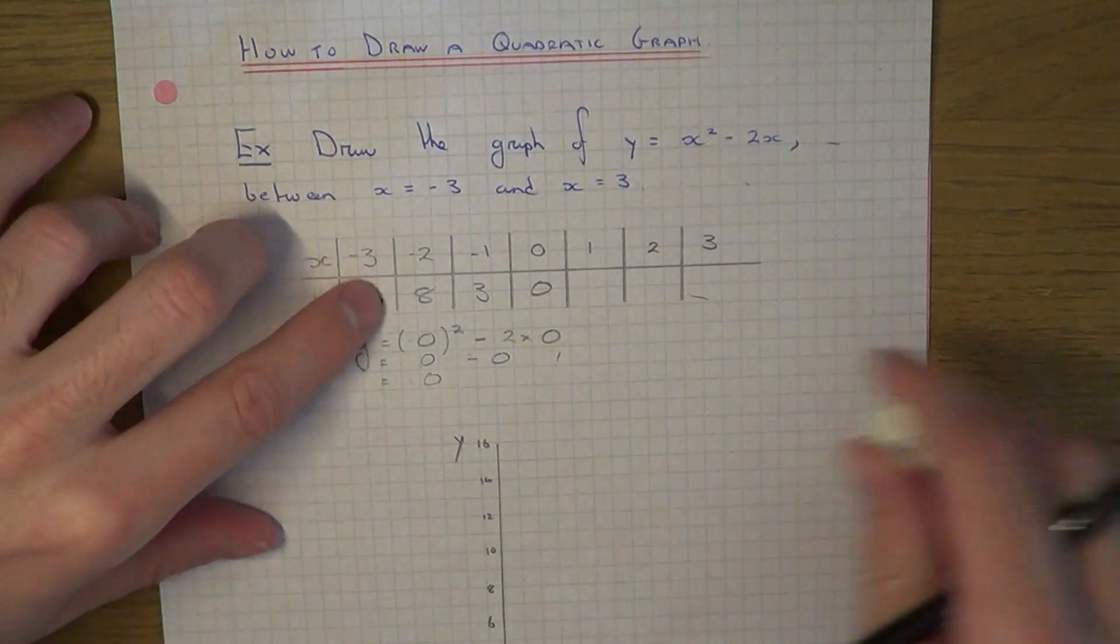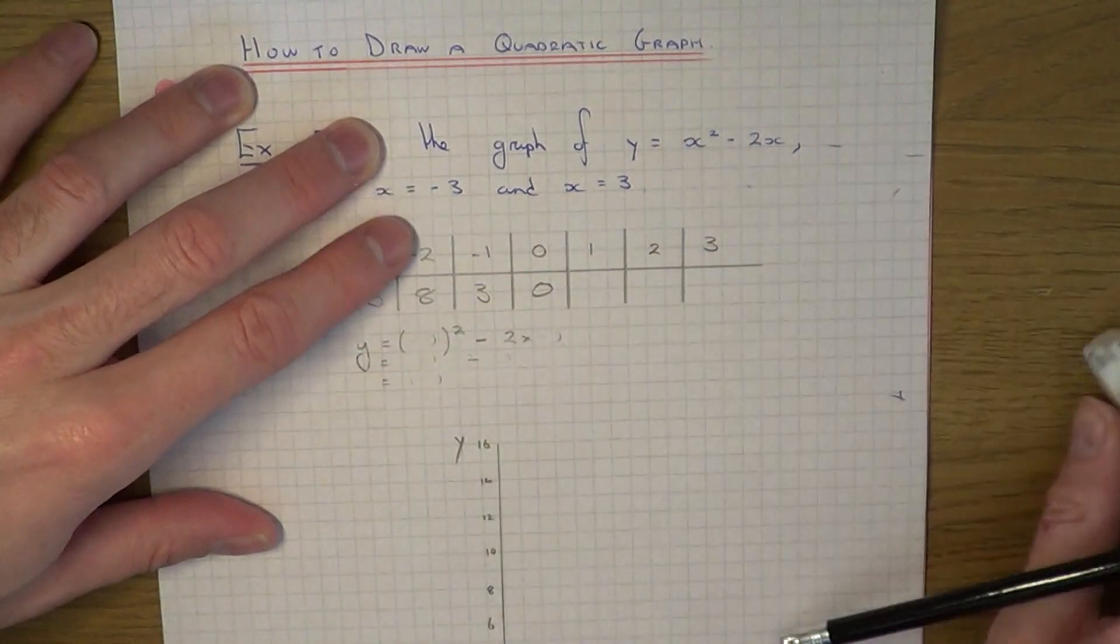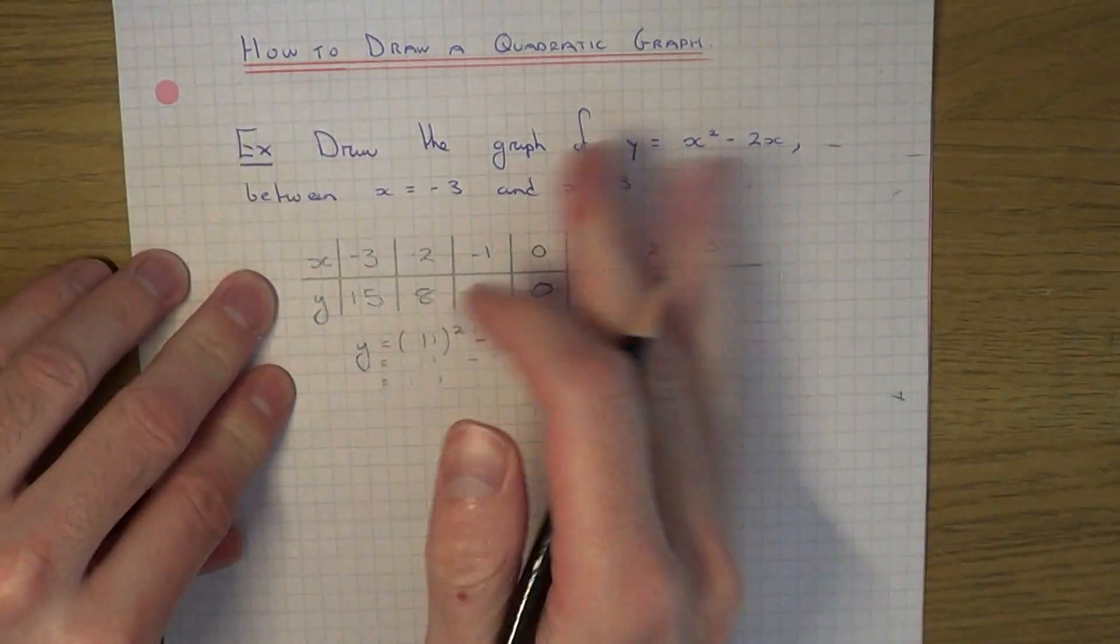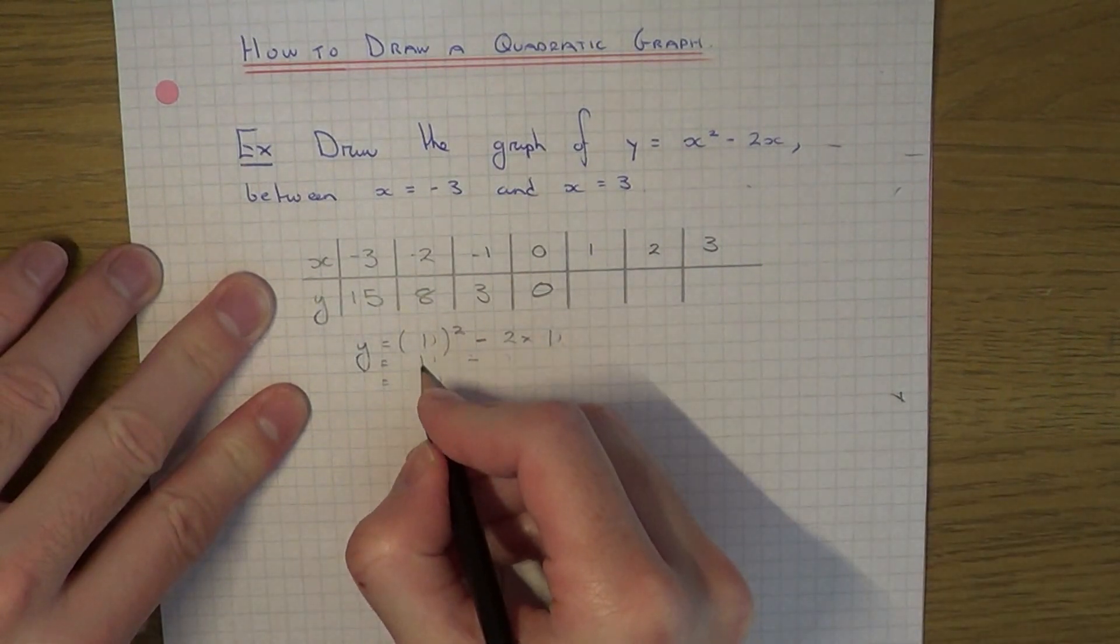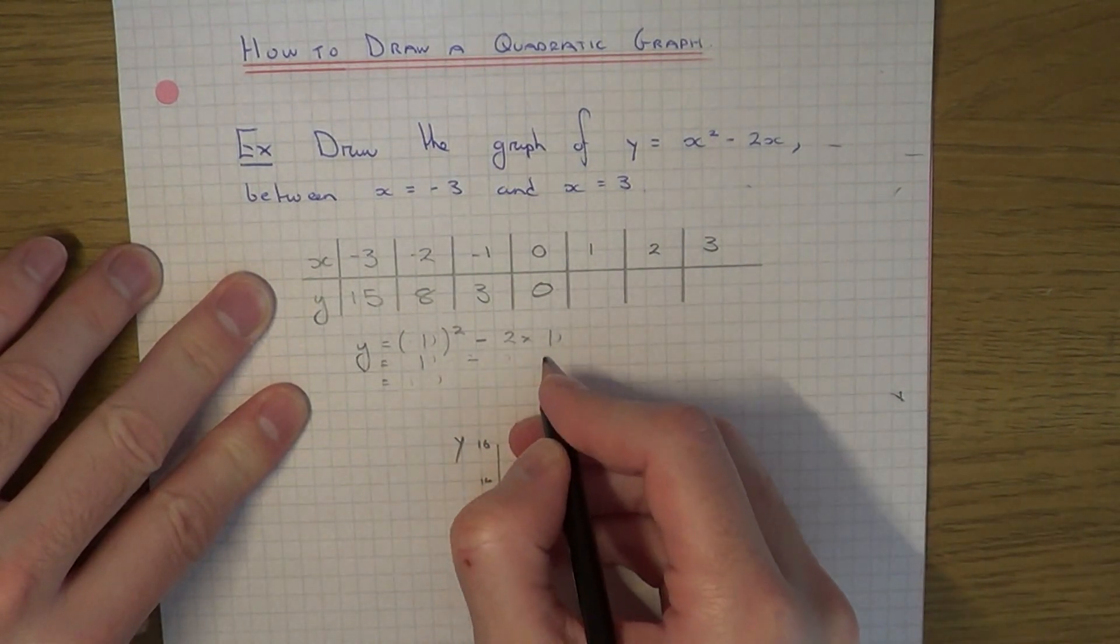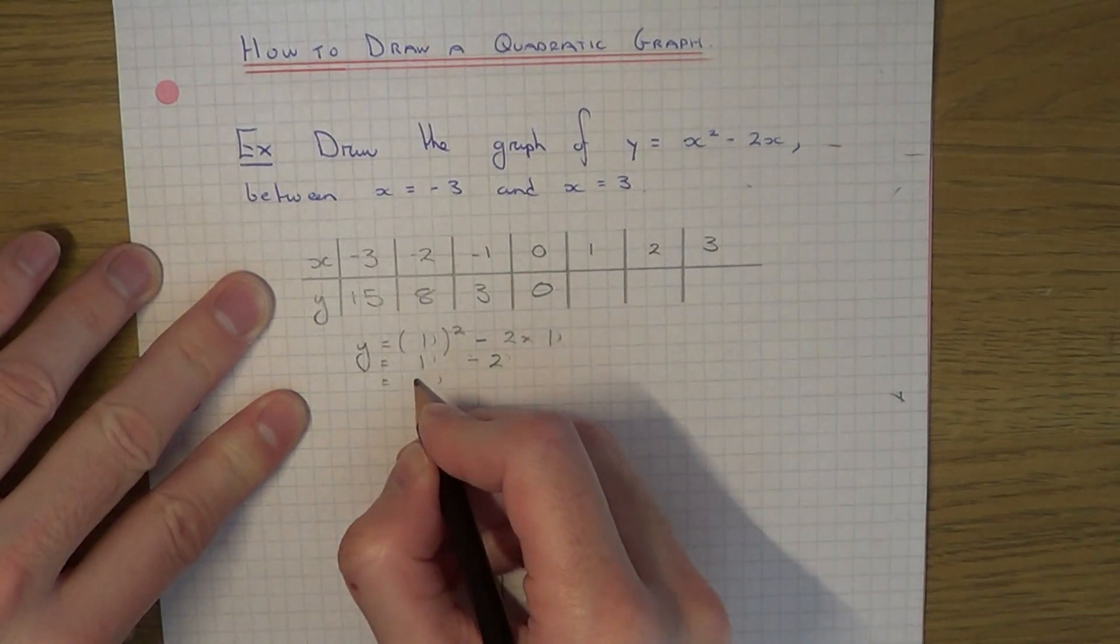Let's put x equals 1 in next. This time it would be 1 squared minus 2 times 1. 1 squared is 1. Minus 2 times 1 is minus 2. 1 take away 2 is minus 1.